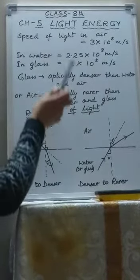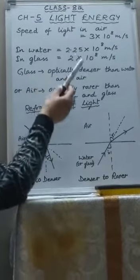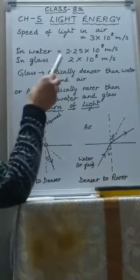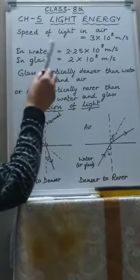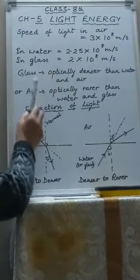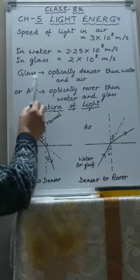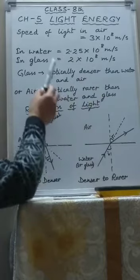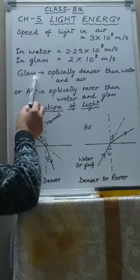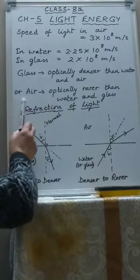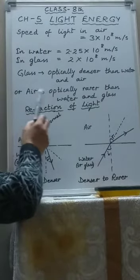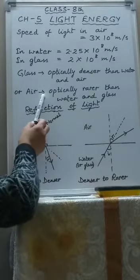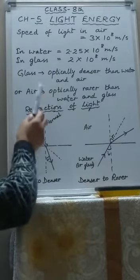In the language of physics, if the speed of light in a medium decreases, then that medium is said to be optically denser than the other medium in which the speed of light is more. Glass is said to be optically denser than water and air because the speed of light among these is minimum in glass. Air is optically rarer than water and glass because the speed of light is maximum in air.